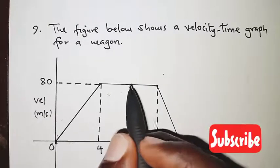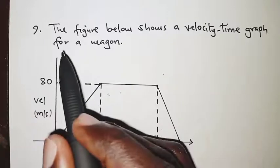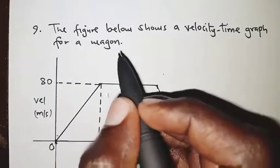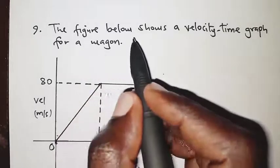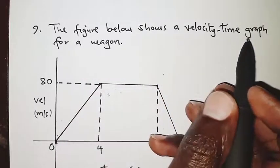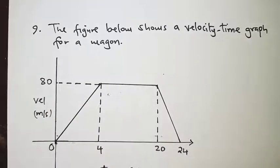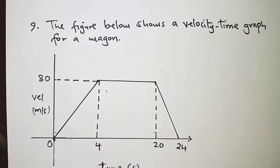Welcome, this is question 9 today and the question is on linear motion. The question reads: the figure below shows a velocity-time graph for a wagon, and the graph is as shown.